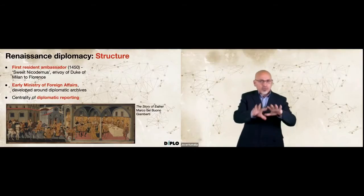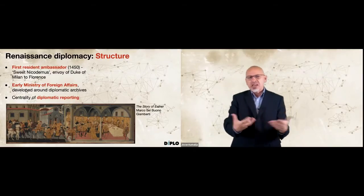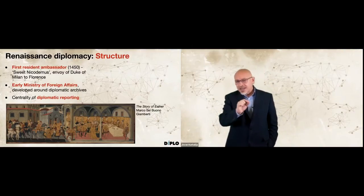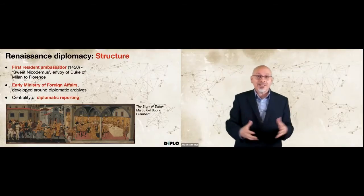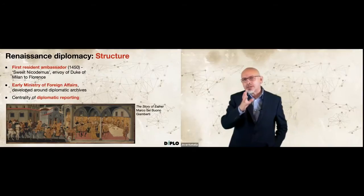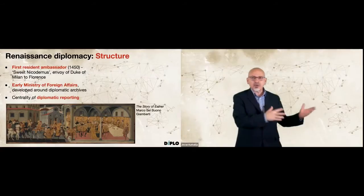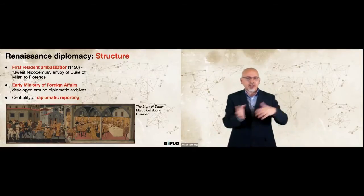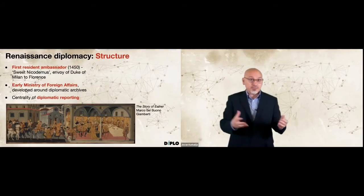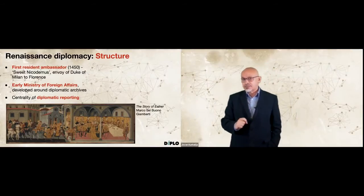The main task of a resident ambassador was to gather information and develop relations — not that different from our era. At that time, in a world without newspapers or internet, diplomats and ambassadors became crucial intelligence gatherers. They reported on the situation at court, the state of alliances, military preparations, the atmosphere in the market, and political gossip.